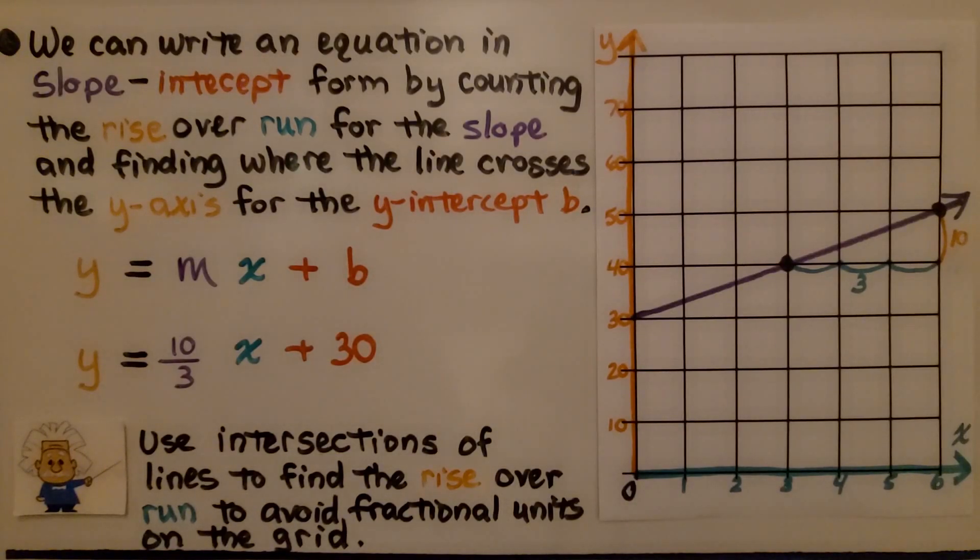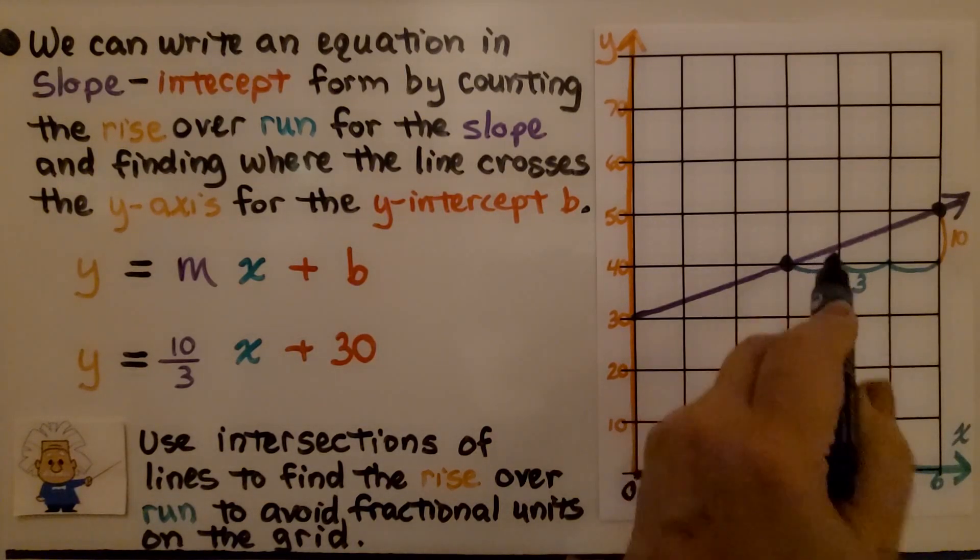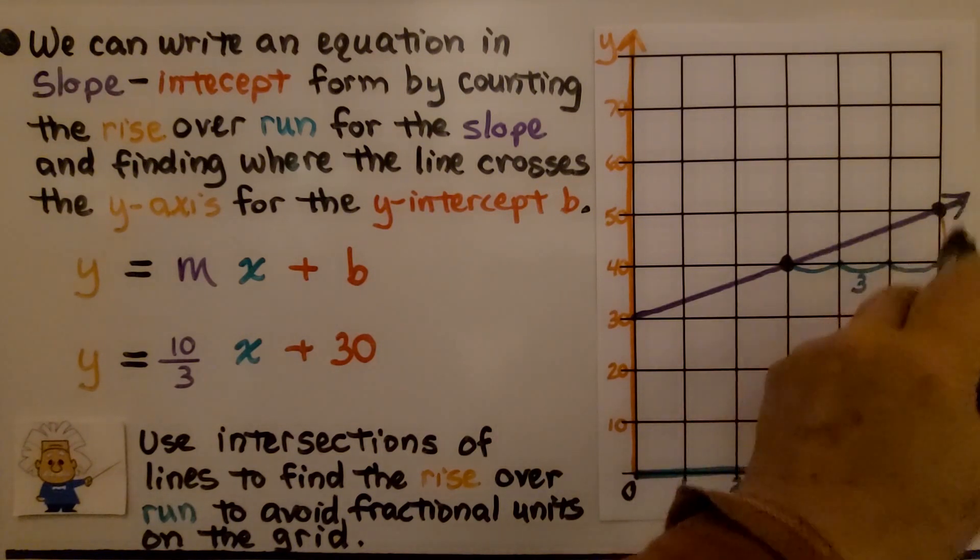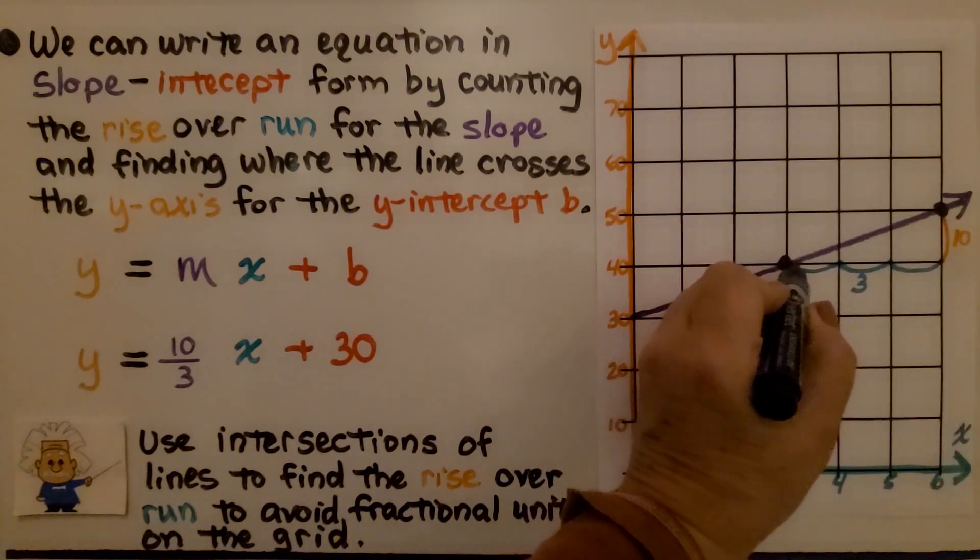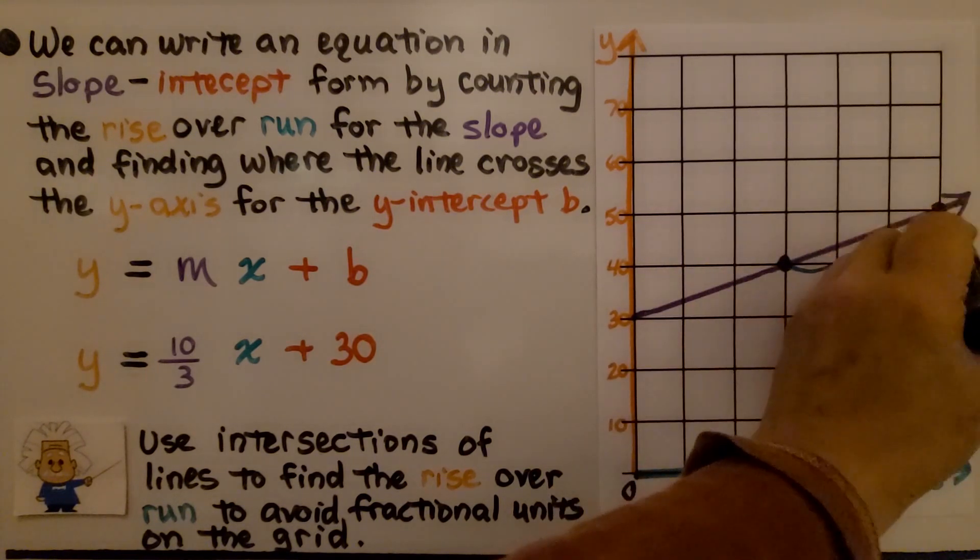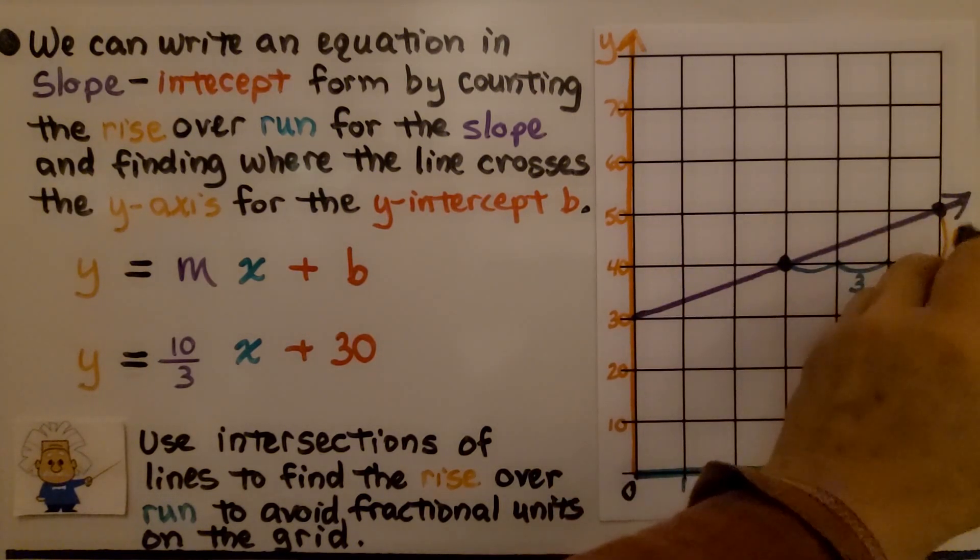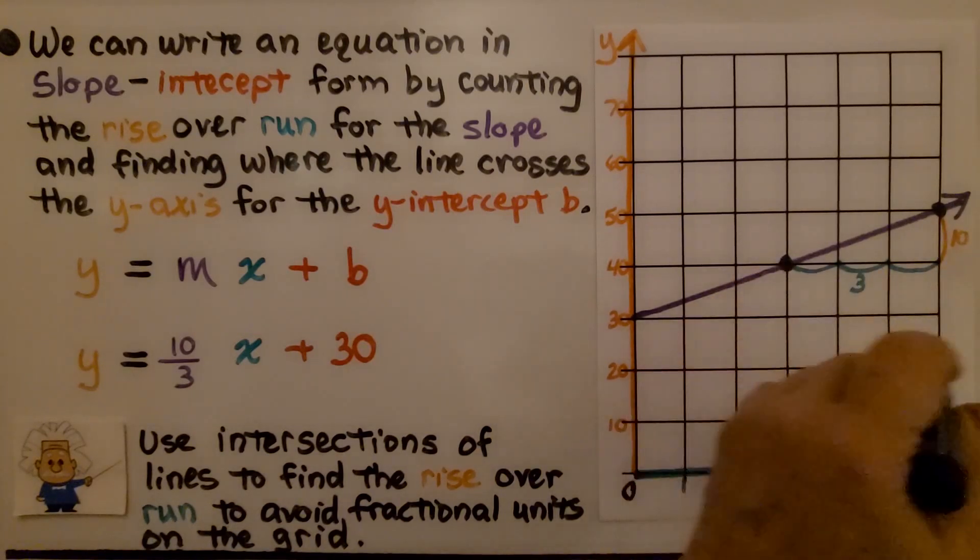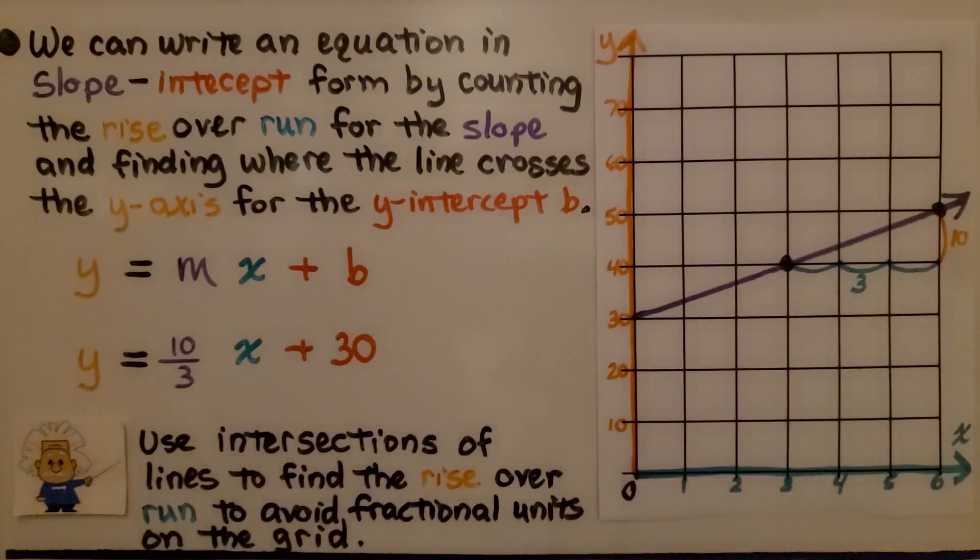We can write an equation in slope-intercept form by counting the rise over run for the slope and finding where the line crosses the y-axis for the y-intercept b. We use intersections of lines to find the rise over run. Here's an intersection where the two lines cross and here's an intersection. We can use these to find the rise over the run. We have a rise of 10 and a run of 3 according to the number scales on this coordinate plane.